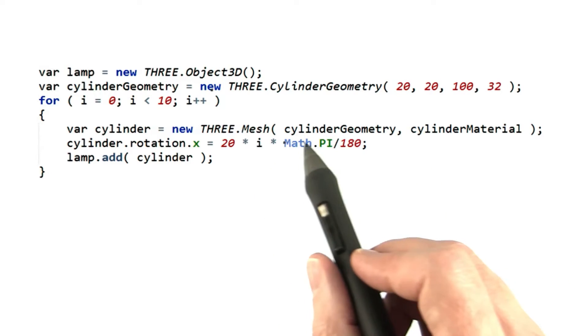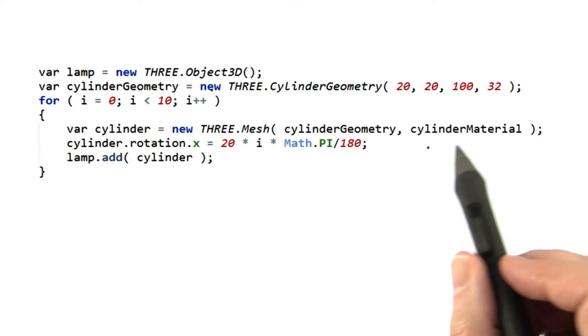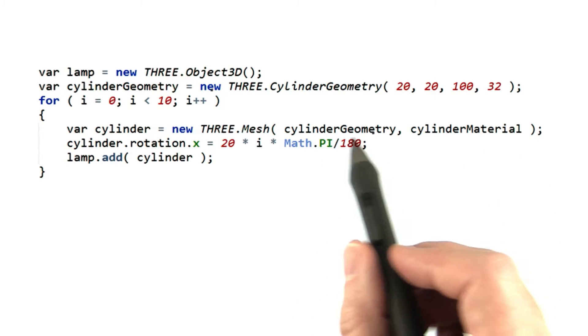Note that an object is made from some geometry and a material. This means I could have given each cylinder a different material while reusing the same geometry.